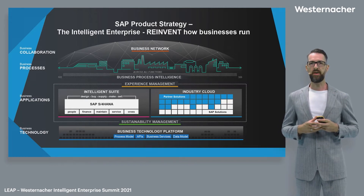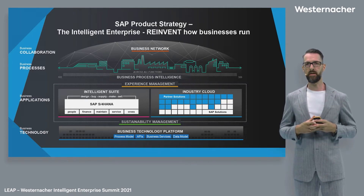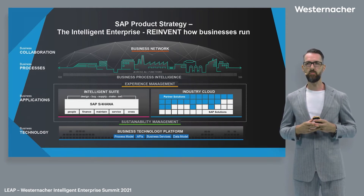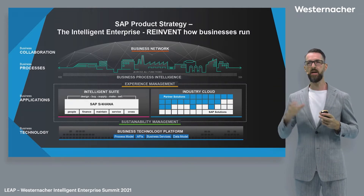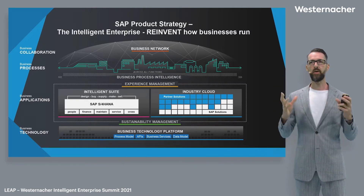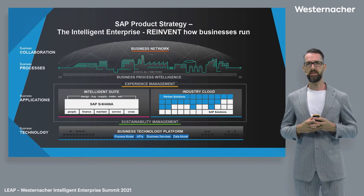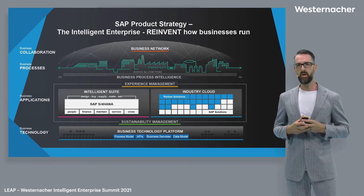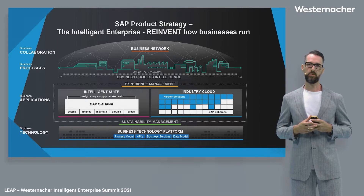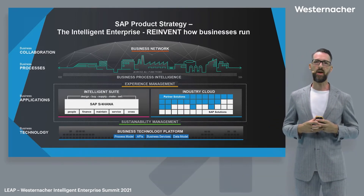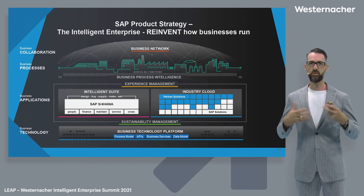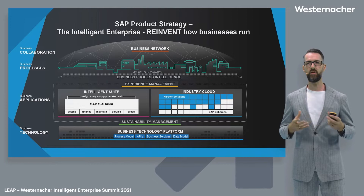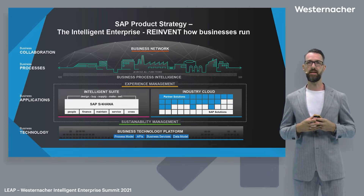On top, we have the Intelligent Suite, combining SAP S4HANA, our core digital ERP, but also our cloud solutions like SuccessFactors, Ariba, and Concur. With the Intelligent Suite, you can span the whole supply chain and the whole ERP processes of your company. Next to the right, we have the Industry Cloud — our way to build edge solutions dedicated on the Business Technology Platform to extend the classical reach and portfolio of the Intelligent Suite.